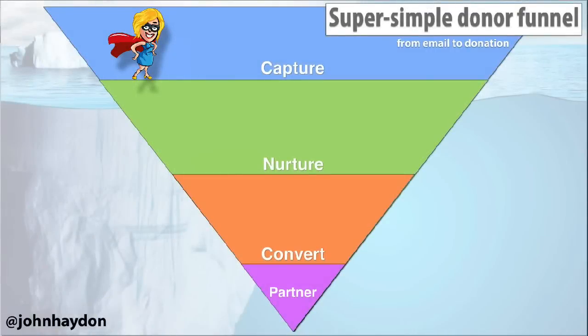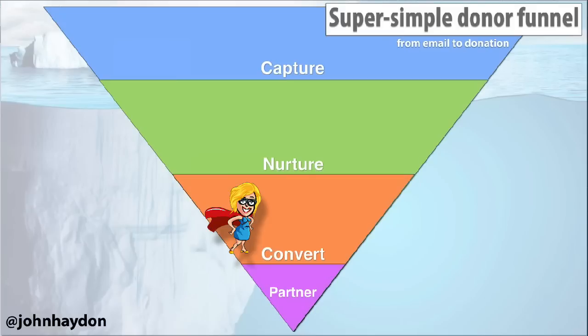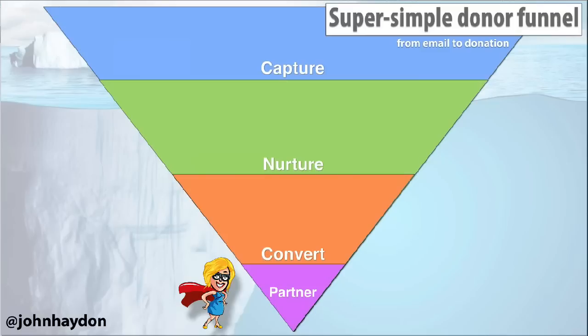Let's say that Supergirl here signs a petition, gets a couple of email messages that are positive that she engages with, and eventually she makes a donation through one of those emails. Further along the way, she might engage with the organization again, and if things work well for both parties, she will remain a partner — somebody who's really a passionate long-term supporter.